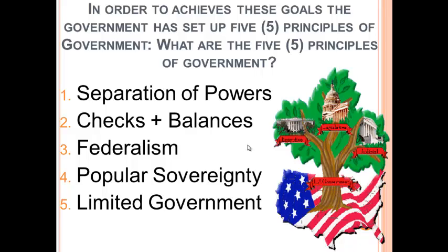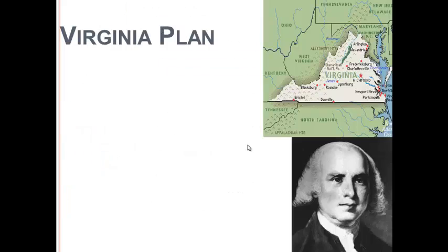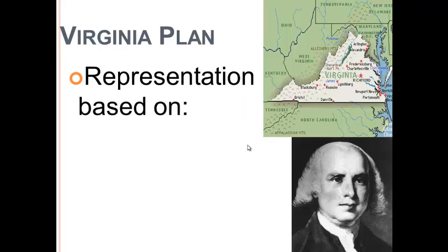There are several compromises that you need to know from the Constitutional Convention, and the first one is made up of two important plans. Some basic things we have to know: the Convention was really convened to try and make the Articles of Confederation better. But after discussion, the founders realized the Articles really weren't going to work — it just did not give the government enough power. So they decided to scrap it and start from scratch. This was not an easy task for all these founders coming together with different perspectives from different regions and with different ideas to create a new central government.